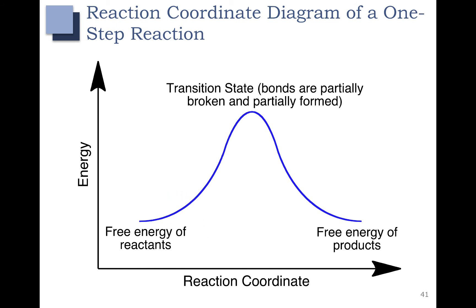This is a very simple reaction coordinate diagram for a one-step reaction. You can see the reactants on the left and the products on the right. In this case, the energy for the reactants and the products is equal because they are at the same height. The y-axis here is energy. In the middle, this hump is a transition state — this is between the reactants and the products where you have your bonds forming, so they are partially broken and partially formed. If we have a multi-step reaction, we'll have a hump or a transition state for every step.